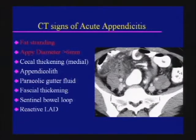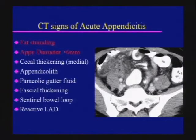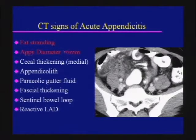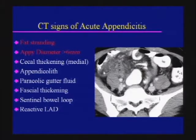The CT signs of acute appendicitis: the first two are the most sensitive and specific findings. You want to call appendicitis if you see fat stranding in the peri-appendiceal region and an appendix with a diameter larger than six millimeters. You may also see cecal thickening — particularly the medial wall — an appendicolith, paracolic gutter fluid, fascial thickening along the lateral conal fascia, a sentinel bowel loop, and reactive lymph nodes.